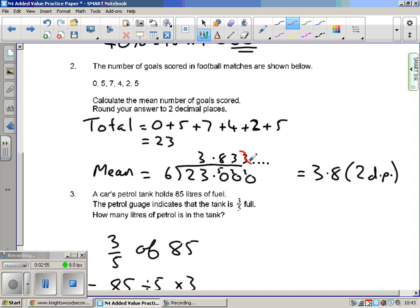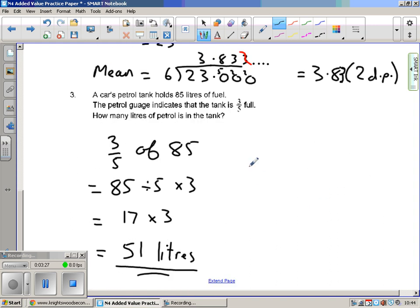Now we need to round that to two decimal places. That means we need two numbers after the decimal point, so the first two numbers are eight and three. I'm going to discount this one. If this number was five or more I would have to round up to 3.84, but it isn't, it's four or less, so the answer is just going to be 3.83 to two decimal places. Quick recap there: add them up, divide by how many numbers you've got, and you have to do a bit of rounding as well.